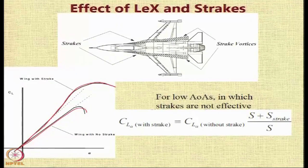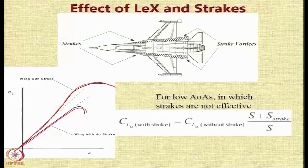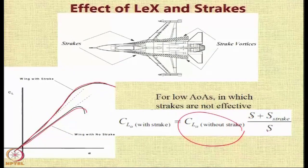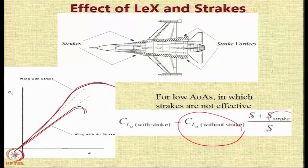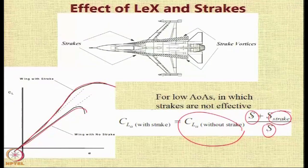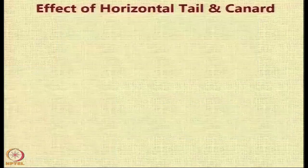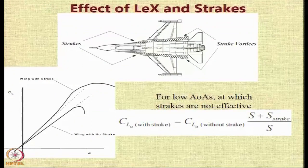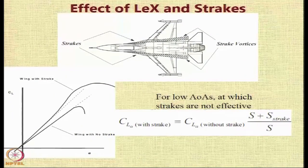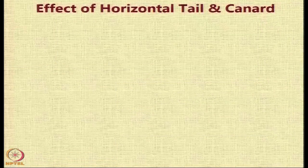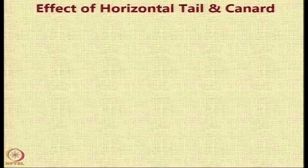So the CL alpha with strakes can be simply estimated as the CL alpha without strakes that you already know, multiplied by the summation of the strake area and the wing reference area upon the wing reference area. This formula can give you information regarding the strakes. But this is only applicable for low angle of attacks at which the strakes are not very effective, because then we assume them to be like additional area of the wing itself.